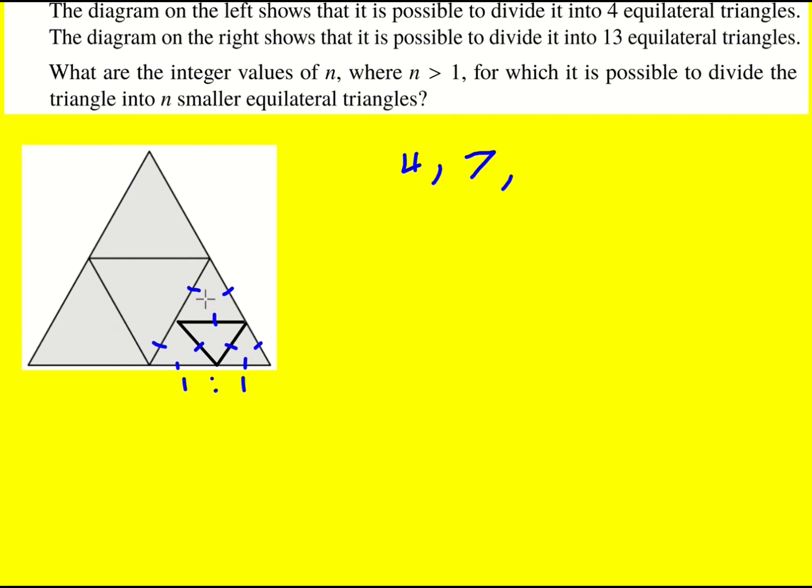But we could actually rather than taking one of the bigger ones split one of these ones into four again. Basically we can repeat and so what we do is we lose one of the original ones and we gain another three. So four, seven, ten and from a similar argument by then doing it to one of the other smaller ones we can always basically keep adding three.